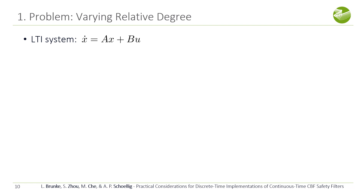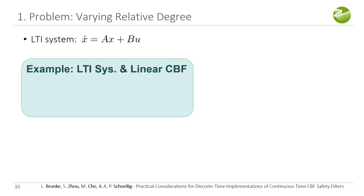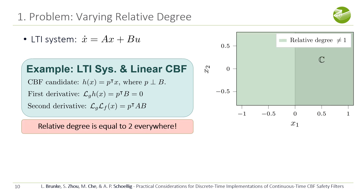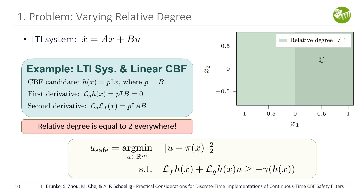In the second example, we again have a linear system with a linear CBF, however now we assume that the vector P is orthogonal to the input matrix B. In this case, the relative degree is not equal to one, but it is still constant over the entire state space. Here the CBF condition does not yield a constraint on the control input, and instead higher order CBFs have to be leveraged.